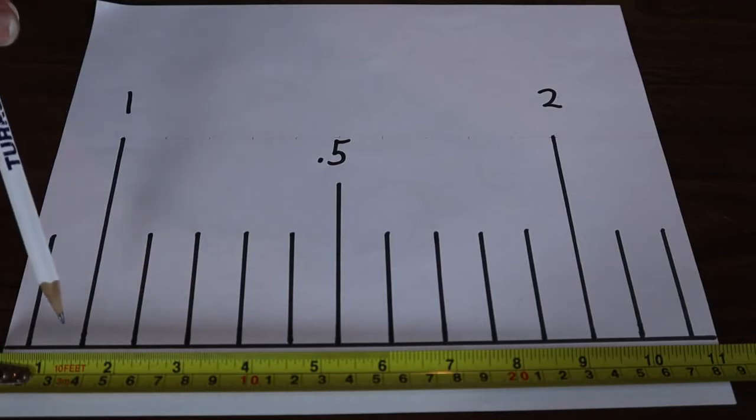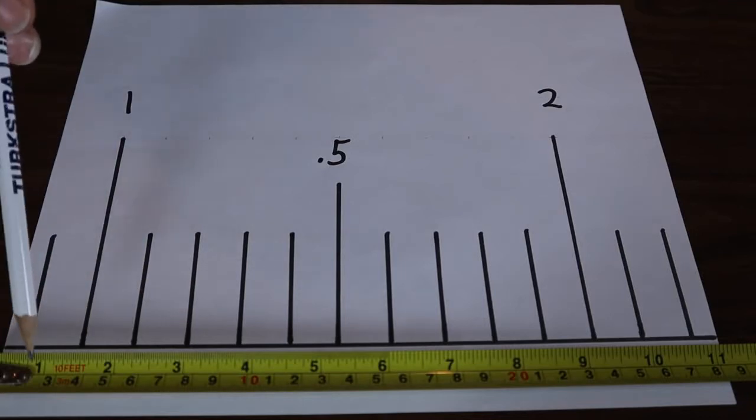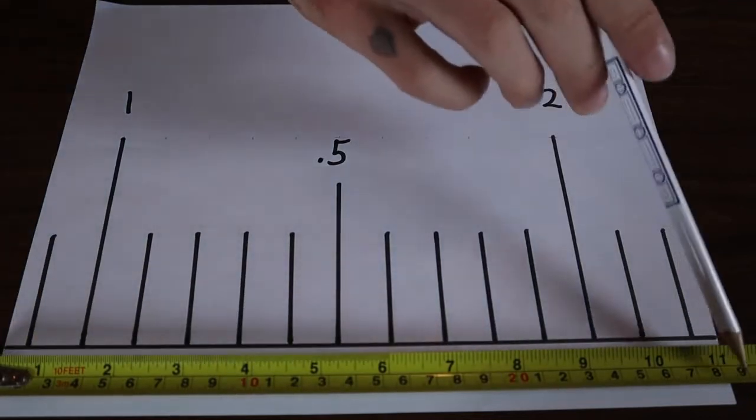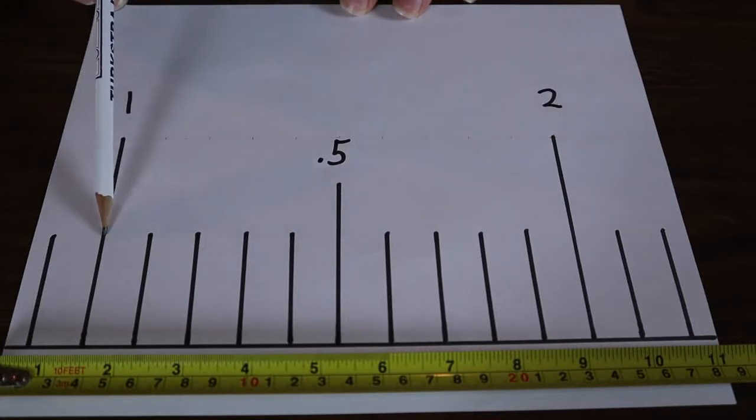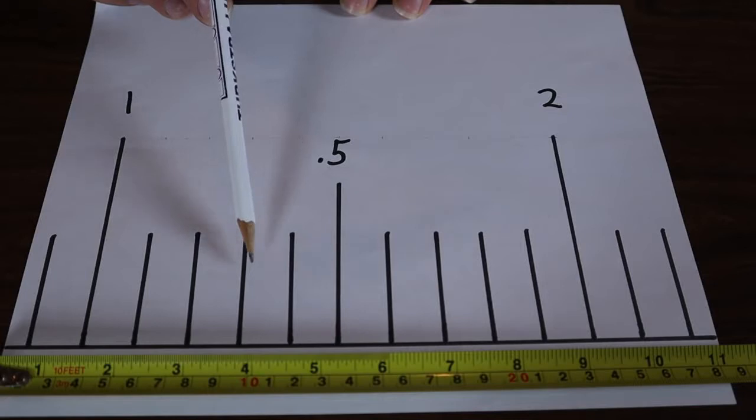So the first thing to know about metric is that everything is broken up into increments of tens, hundreds, and thousands. This is an illustration of one centimeter, and between that centimeter there are 10 millimeters all the way along, and in one meter there are a hundred centimeters.